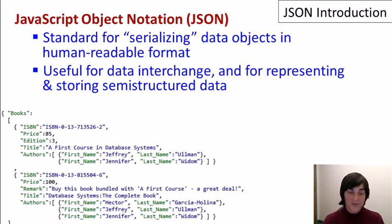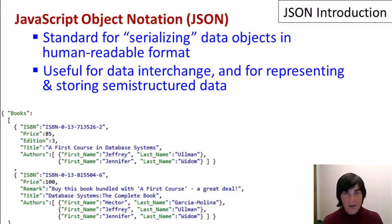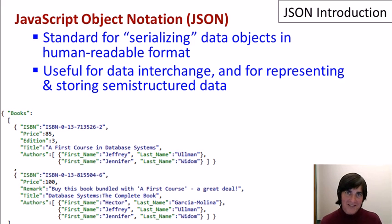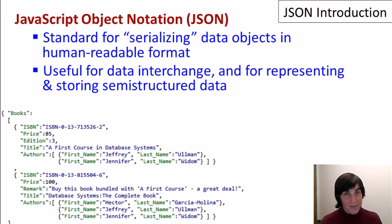So to summarize: JSON stands for JavaScript Object Notation. It's a standard for taking data objects and serializing them into a format that's human readable. It's also very useful for exchanging data between programs and for representing and storing semi-structured data in a flexible fashion. In the next video, we'll go live with a demonstration of JSON — we'll use a couple of JSON editors, look at the structure of JSON data when it's syntactically correct, demonstrate how it's very flexible when our data might be irregular, and also demonstrate schema checking using an example of JSON schema.